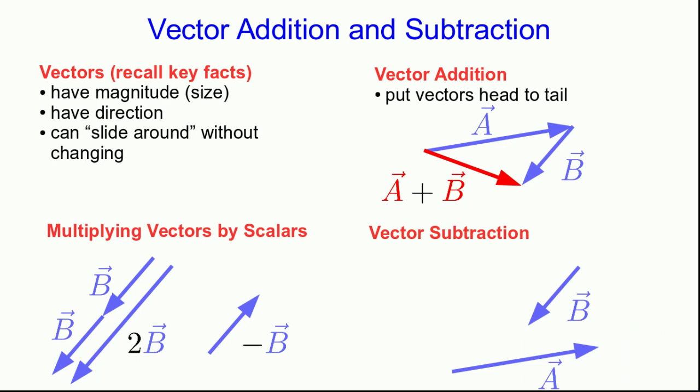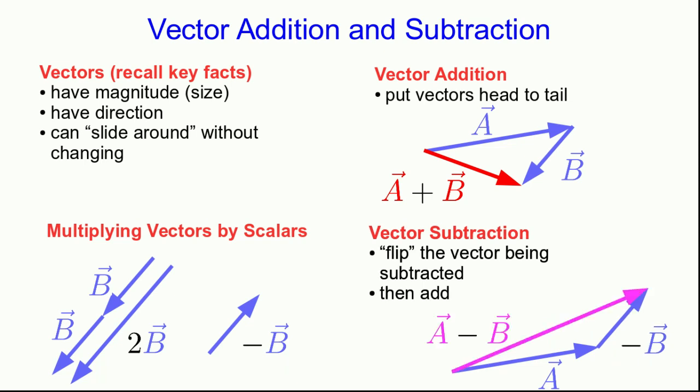Start with our vectors A and B. Let's flip B around so that we have negative B, and then add that to A. And what we now have is A minus B.